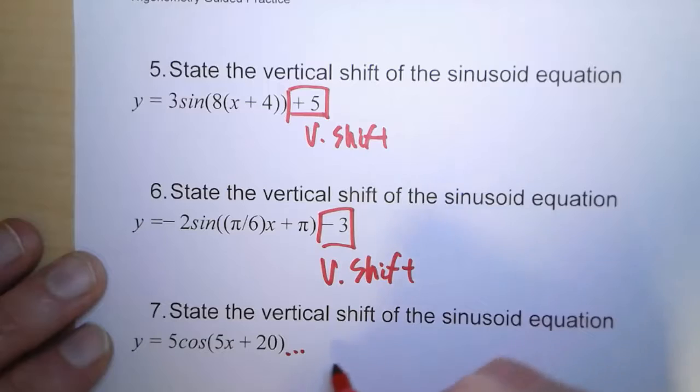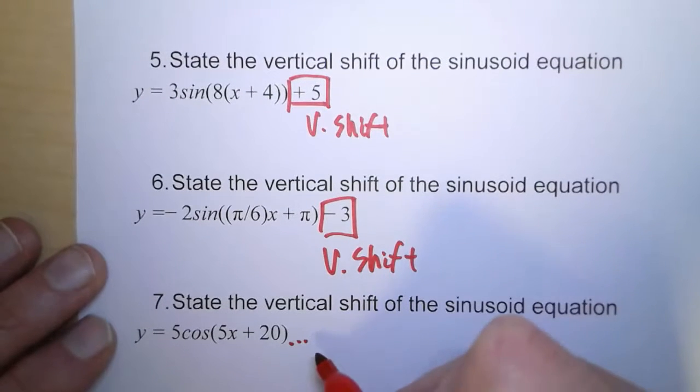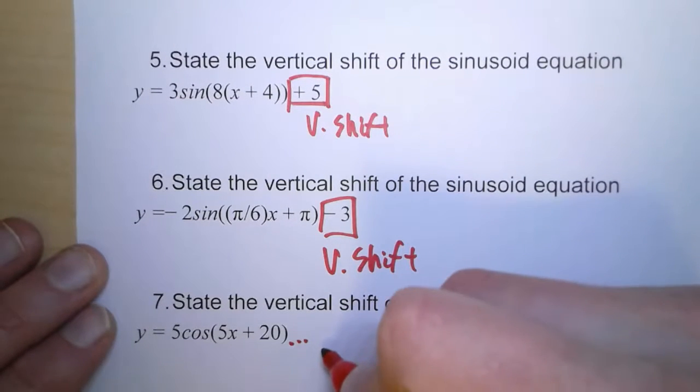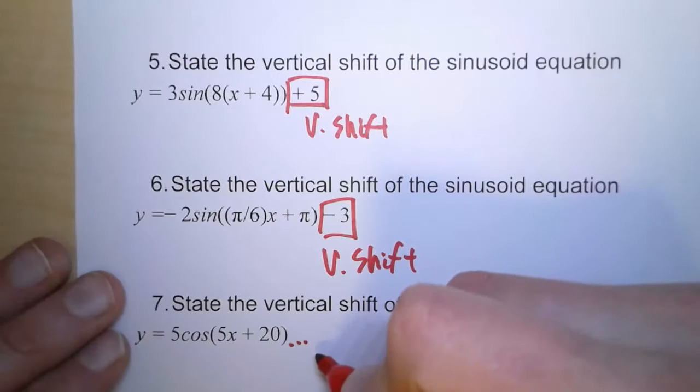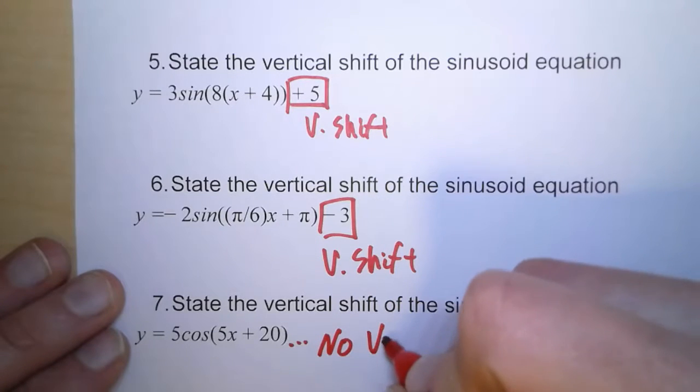Now for the last one, we're not adding anything. We're not subtracting anything. So that means it's still centered on 0. So for this one, there is no vertical shift.